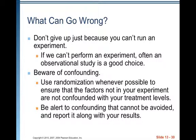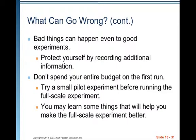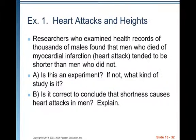What can go wrong? Don't give up just because you can't run an experiment — if we can't perform one, often an observational study is a good choice. Be aware of confounding; use randomization whenever possible to ensure factors not in your experiment are not confounded with your treatment levels. Be alert to confounding that cannot be avoided and report it along with your results. Bad things can happen even to good experiments, so protect yourself by recording additional information — whatever happens needs to get written down. Don't spend your entire budget on the first run; try a small pilot experiment before running the full-scale experiment, as you may learn things that will help make it better.